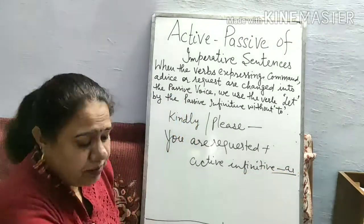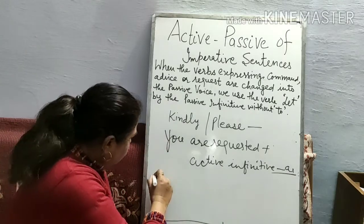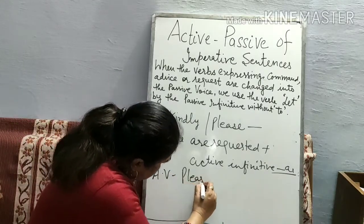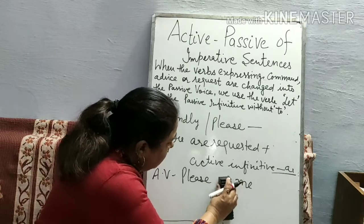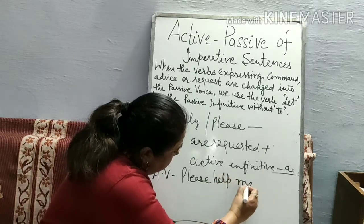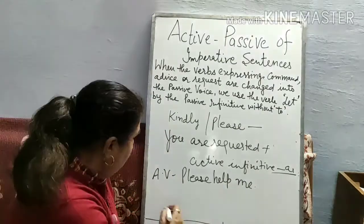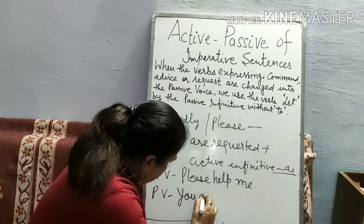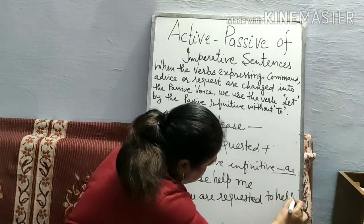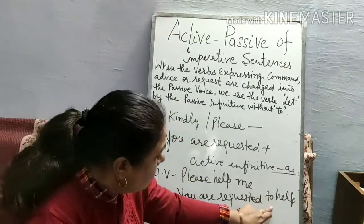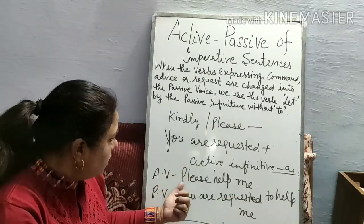For example, active voice: 'Please help me.' The passive voice will be: 'You are requested to help me.' After 'you are requested,' we use the active infinitive — that is, 'to' followed by the base verb. So the answer is: 'You are requested to help me.'